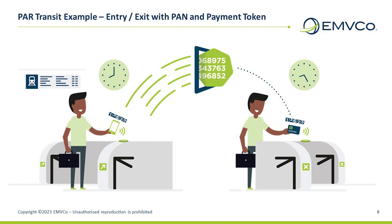In this example, upon entry, you select a payment credential from the mobile payment application on your consumer device. You enter the transit system using your device at the contactless enabled entry point or turnstile, which receives the PAR data as part of the information passed during the contactless tap. The turnstile verifies the authenticity of the payment credential. Following verification, the turnstile opens, allowing you to enter. The turnstile then passes the entry information, including the PAR data, to the transit operator's system.